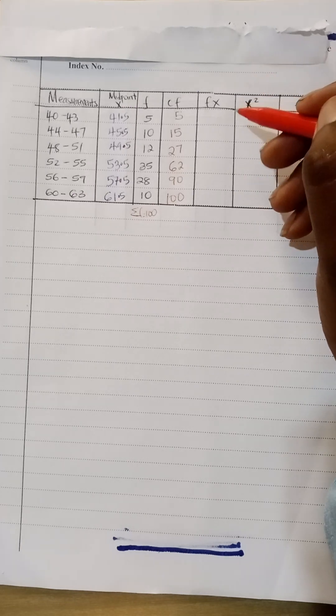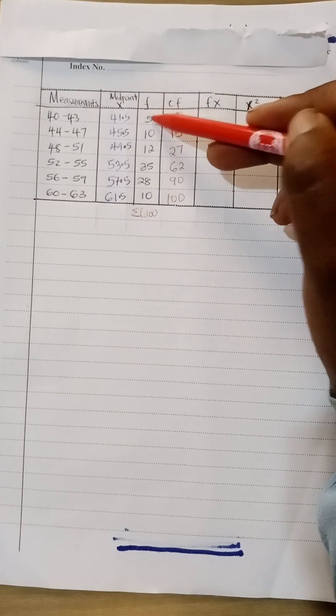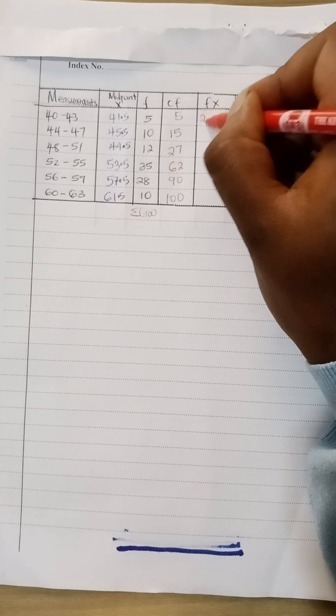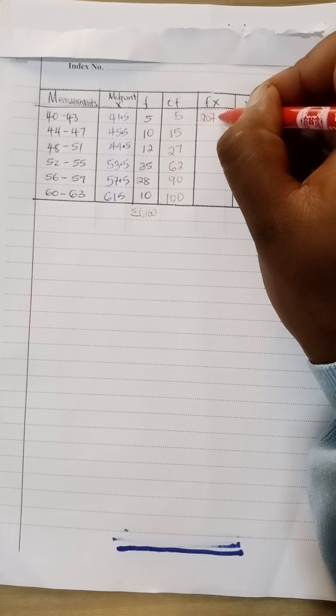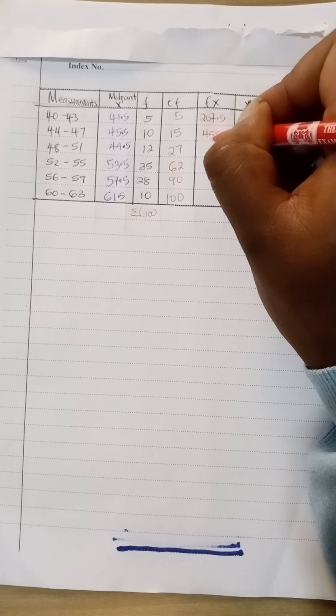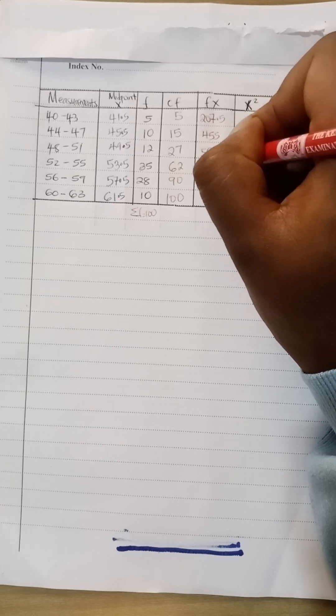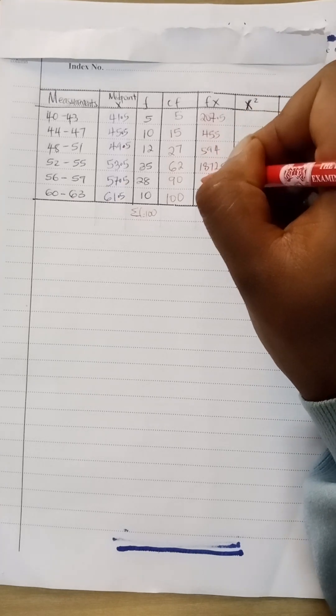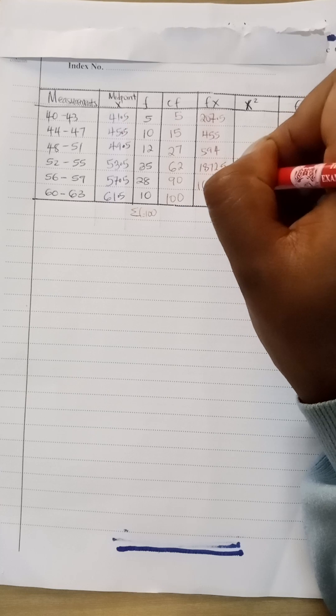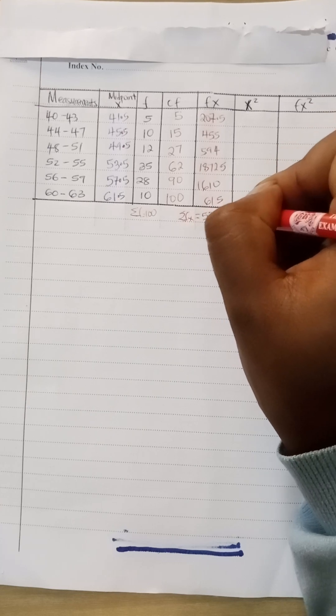Now to get fx is basically the frequency times the midpoint. So the first value here is 5 times 21.5, you get 207.5, here you get 455, 594, 1872.5, here you get 1610, and here you get 665. So the summation of fx here if you add all this you get 5354.